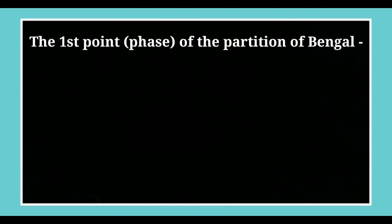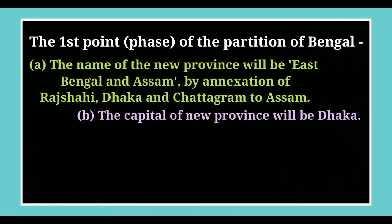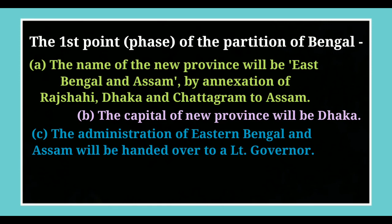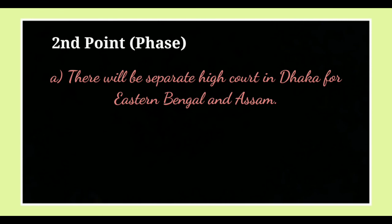The four-point program on the Partition of Bengal declared by Lord Curzon on 1st September was as follows. First: (A) The name of the new province will be East Bengal and Assam, by annexation of Rajshahi, Dhaka, and Satragam to Assam. (B) The capital of the new province will be Dhaka. (C) The administration of Eastern Bengal and Assam will be handed over to a Lieutenant Governor. (D) The capital of Assam will be transferred from Shillong to Dhaka. Second point: (A) There will be a separate High Court in Dhaka for Eastern Bengal and Assam. (B) Until a separate High Court is established, the new province will be under the jurisdiction of Kolkata High Court.